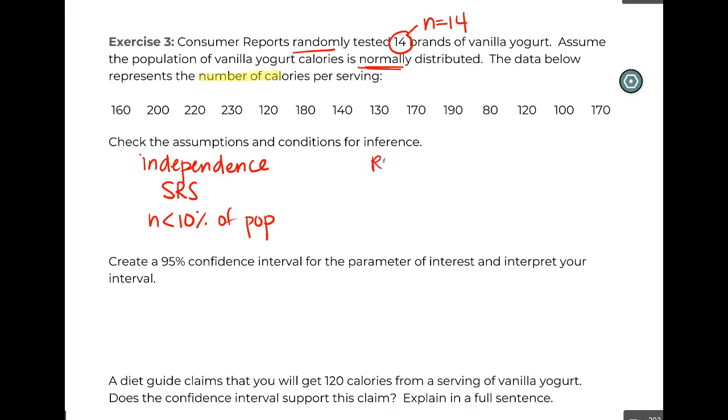Also, our rule of thumb: is n large enough? In this case they did say randomly tested, so I guess we'll give ourselves those two. Less than 10 percent of the population—we'll have no idea how many types of vanilla brands of yogurt are out there. I guess it's going to be more than 140. I would put a big old question mark on that one.